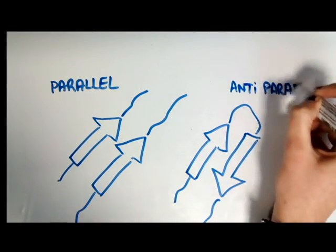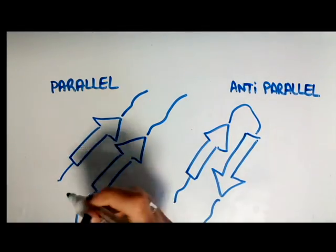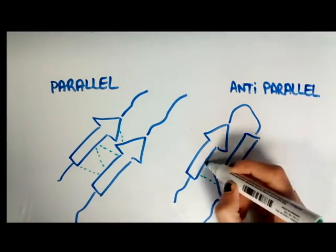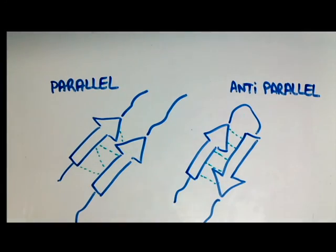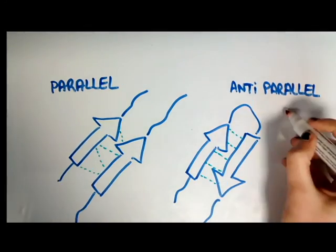In parallel beta sheets, bounds tend to have a v-shaped conformation while the ones involved in anti-parallel beta sheets tend to have a ladder shape. Ladder-shaped bounds usually are the more stable ones. Who said love was about looking in the same direction?